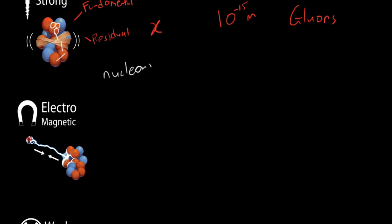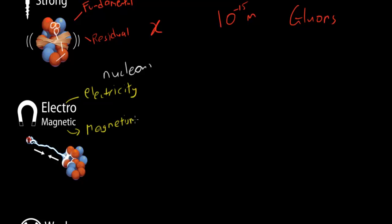The next one is the electromagnetic force. It's actually a combination of two different forces that we used to think were separate: the electrostatic force and the magnetic force. We came to realize that these two are actually the same thing, and this is what light is — light is basically a combination of the electric field and the magnetic field to form the electromagnetic field.